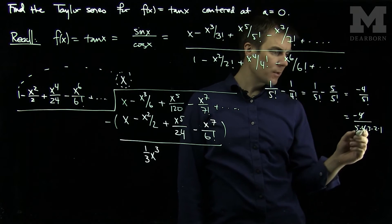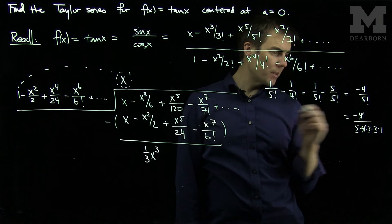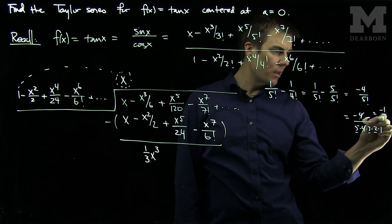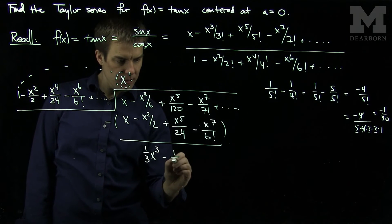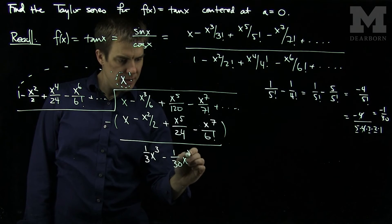Which is minus 4 over 5 times 4 times 3 times 2 times 1. So the 4 will cancel, and I'll have 15 times 2, that's 30. So this is going to be minus 1 over 30. So then I'm going to have minus 1 over 30 x to the 5th.